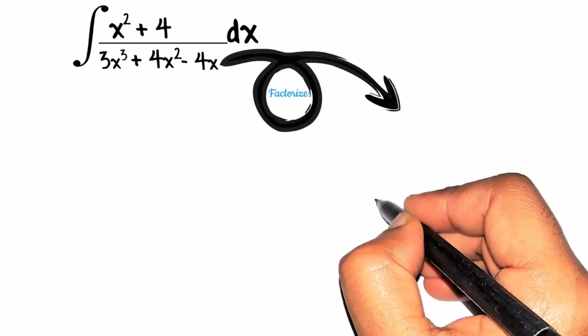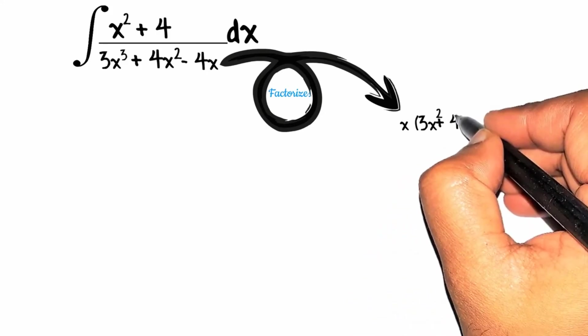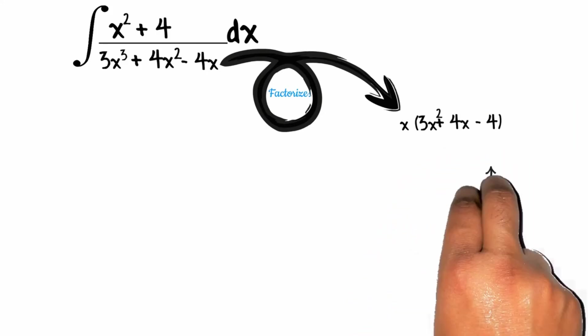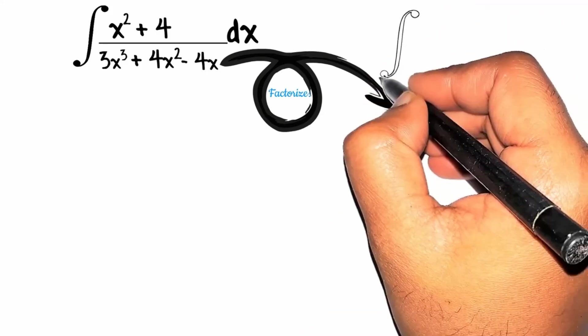So by factorizing it first we will take x common and then further factorize 3x squared plus 4x minus 4 into x x plus 2 and 3x minus 2.